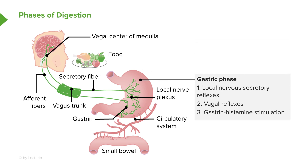The gastric phase involves a lot of reflex responses. Most of these are local reflexes in nature, and these are called vagal-vagal responses. These local reflexes cause a lot of the responses in the stomach, whether from distention, acid, or some other amino acid. In addition to that, there is some gastrin and histamine that is stimulated at this time as well, and both gastrin and histamine will increase acid production.